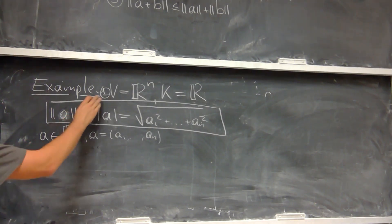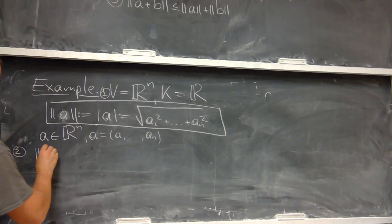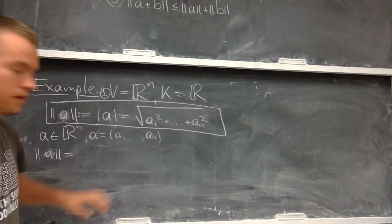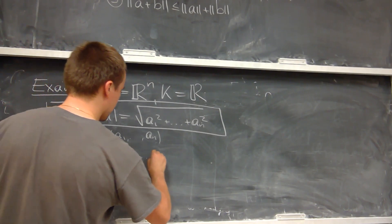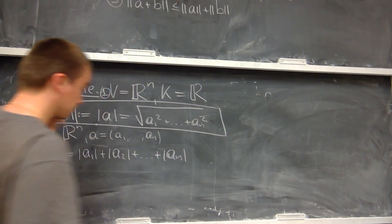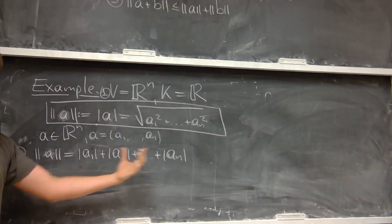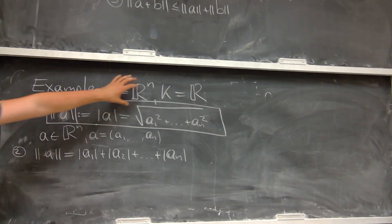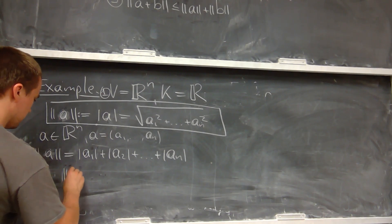Now let me give you a non-trivial example of a norm. We're going to consider the same vector space Rⁿ, but define the norm differently: for a vector with components A1 up to An, the norm is the absolute value of A1 plus the absolute value of A2, plus ... plus the absolute value of An. So instead of squaring, summing, and taking the square root, I just take the sum of the absolute values. I want to show that this function is a norm on Rⁿ.